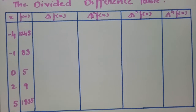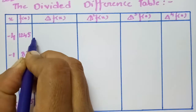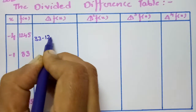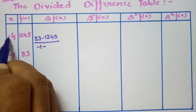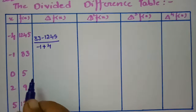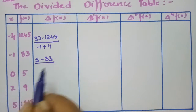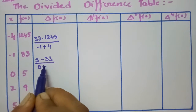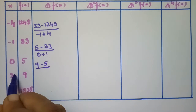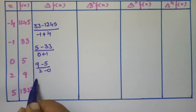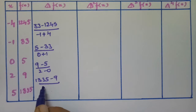First of all, we have to make the first divided difference. This is (33 minus 124.5) divided by (minus 1 minus minus 4), and the next one is (5 minus 33) divided by (0 minus minus 1), then (9 minus 5) divided by (2 minus 0), and (1335 minus 9) divided by (5 minus 2).